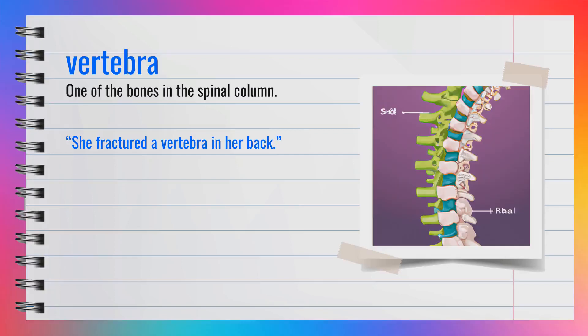The word vertebra is a noun, spelled V-E-R-T-E-B-R-A. Synonyms include spine bone. For example, she fractured a vertebra in her back. In summary, a vertebra is one of the bones in the spinal column.